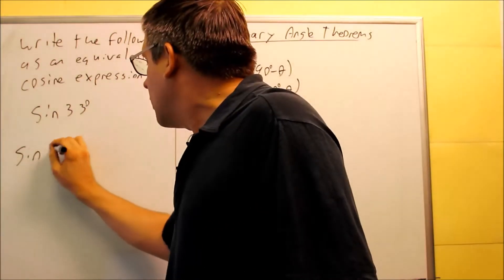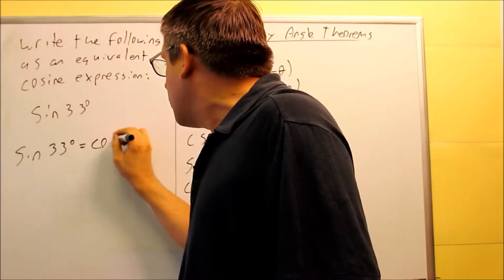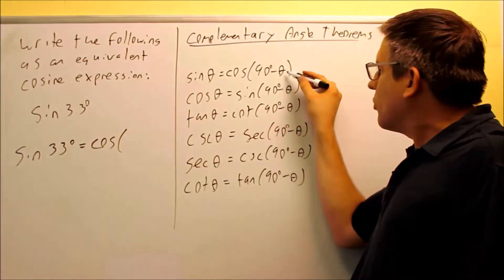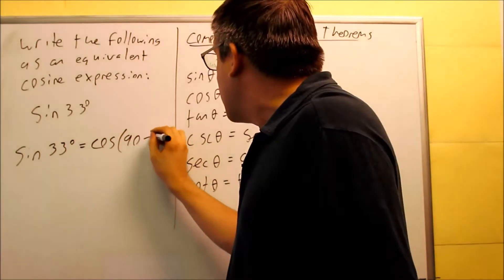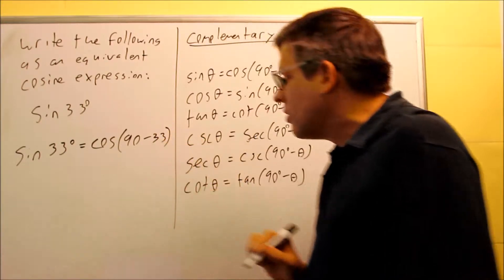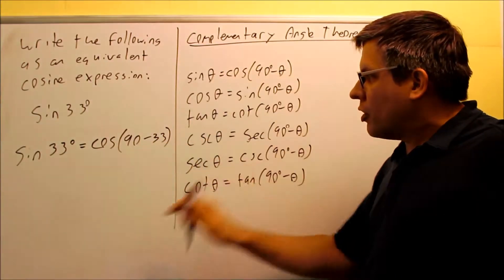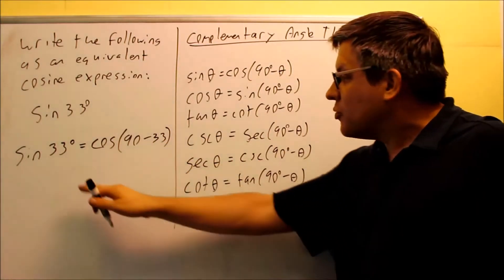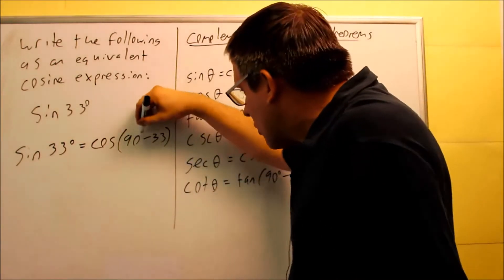I have sine 33 is equal to cosine, I'm just going to plug 33 into the theta here, 90 minus 33. So that's using the first formula and it's writing it out. Now that allows me to change the sine into a cosine.